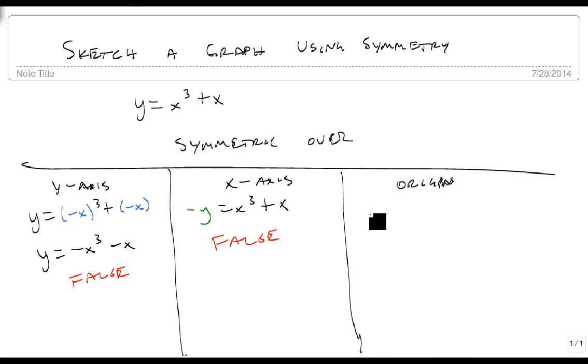And in our last case, we get minus y equals minus x cubed plus a minus x, which becomes minus y equals minus x cubed minus x.